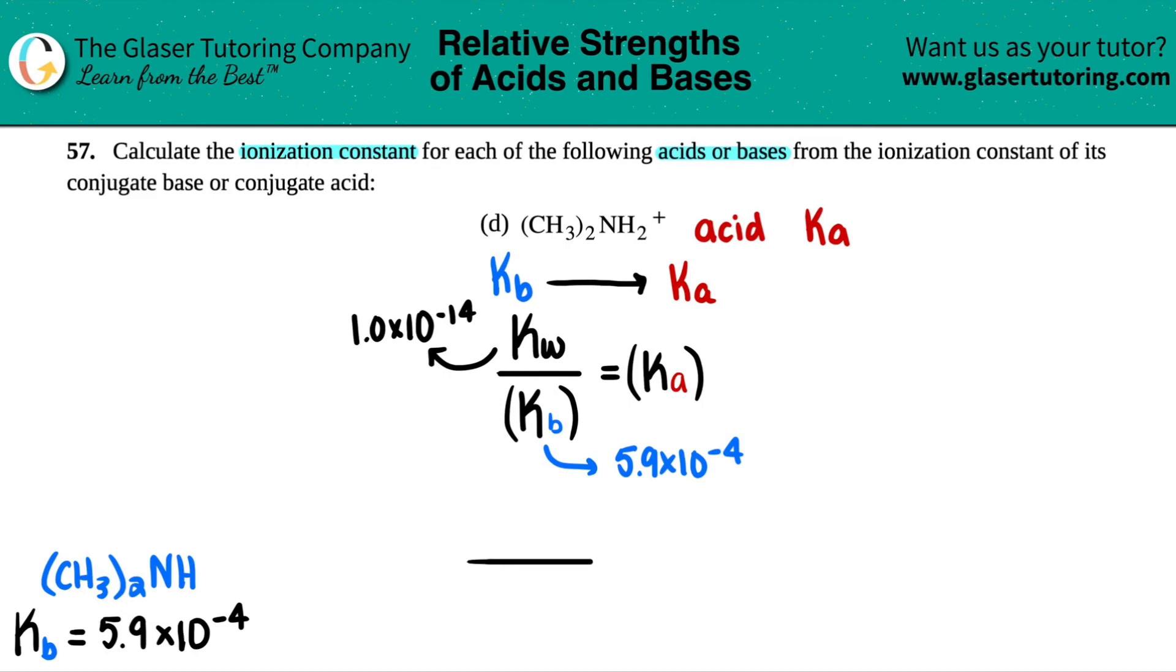So let's plug in these numbers. We have 1.0 times 10 to the negative 14th divided by 5.9 times 10 to the negative fourth. And then we will get the corresponding Ka value. Calc is out. 1 times 10 to the negative 14th divided by 5.9 times 10 to the negative fourth. Two sig figs, if anyone cares. 1.7 times 10 to the negative 11th.